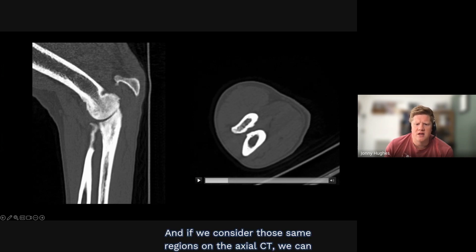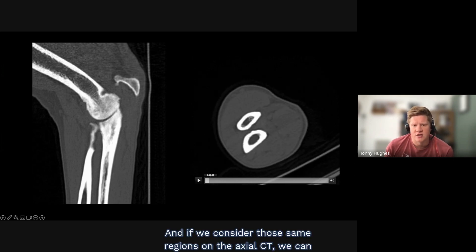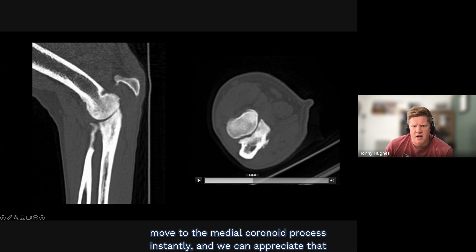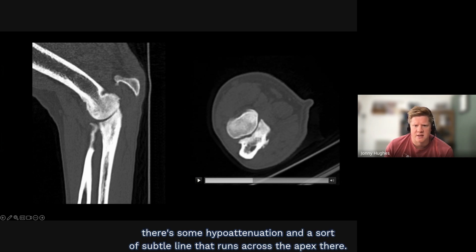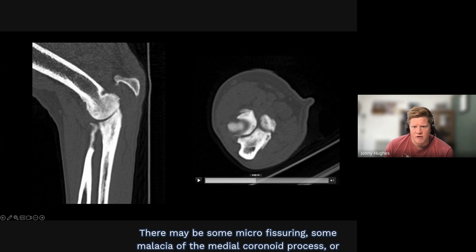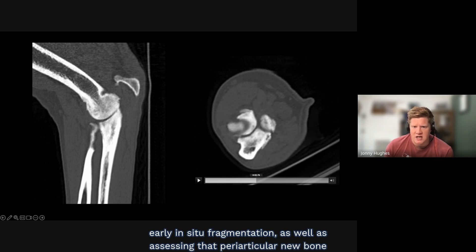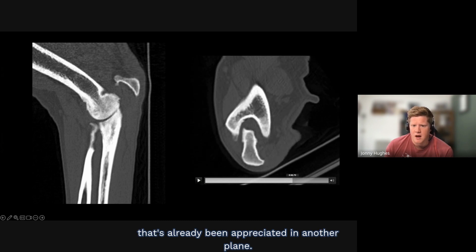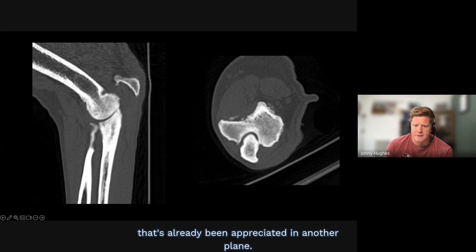Looking at the same region on axial CT, we can move directly to the medial coronoid process and appreciate hypoattenuation and a subtle line running across the apex. There may be microfissuring, malacia of the medial coronoid process, or early in-situ fragmentation. We can also assess the periarticular new bone that was already appreciated in another plane.